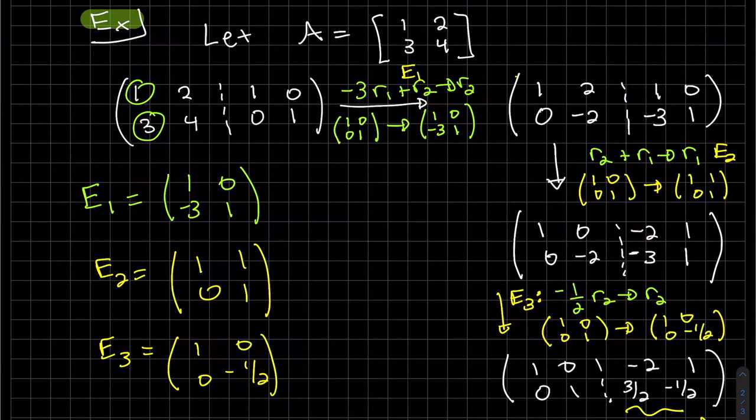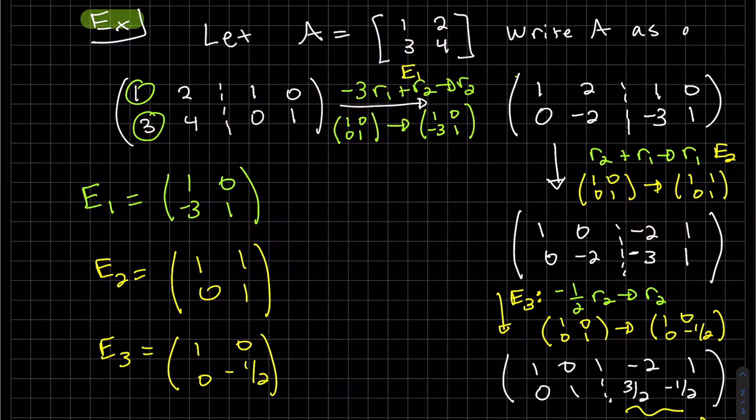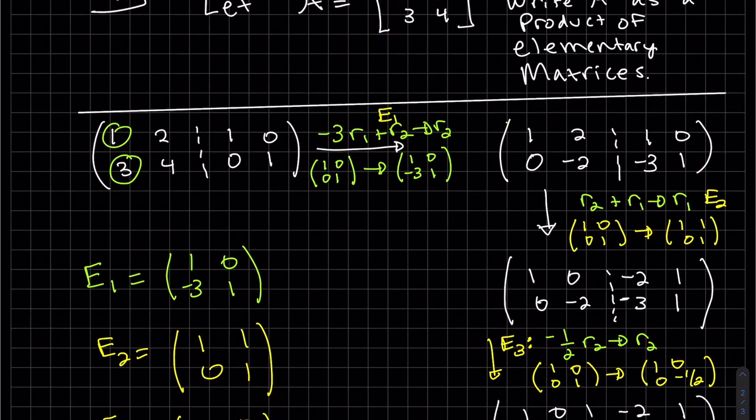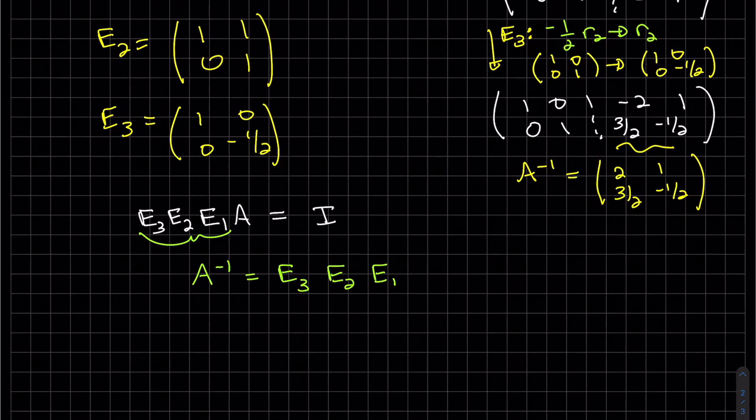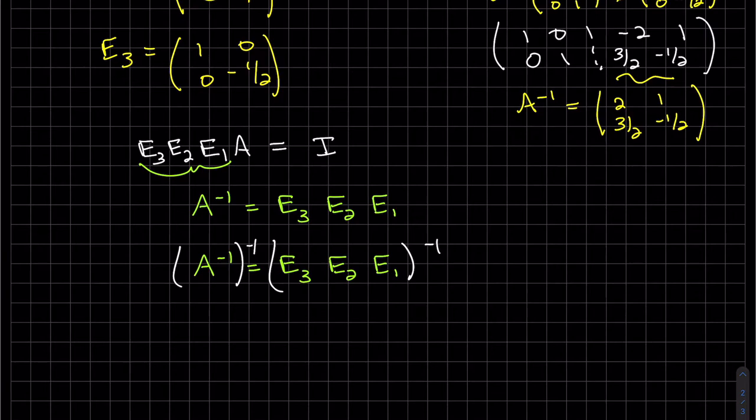And I forgot to write the question. The question is actually, I'm going to write A as a product of elementary matrices. And so what we have here is the inverse is written as a product of elementary matrices, which isn't our question. We want A to be. So all we have to do, I'll copy this again so we don't lose it, is take the inverse of both sides.